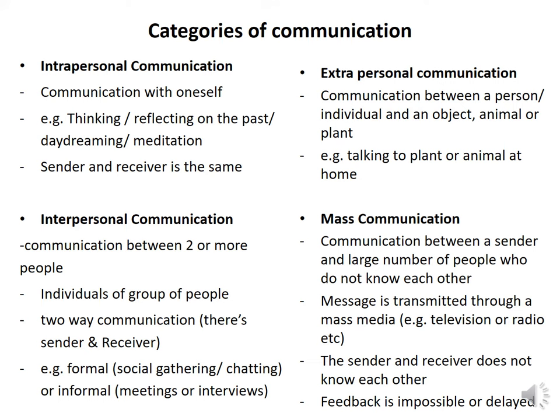Extrapersonal communication is where you speak with an object or a plant — for example, when you speak to your dog. Your dog replies to you, but you do not understand their language — that is extrapersonal communication. Mass communication is where the sender speaks to a large number of people, perhaps through a television, radio, or intercom. During elections, political parties go around speaking to the masses and inviting them to a stadium or venue to get information. Those are the categories of communication.